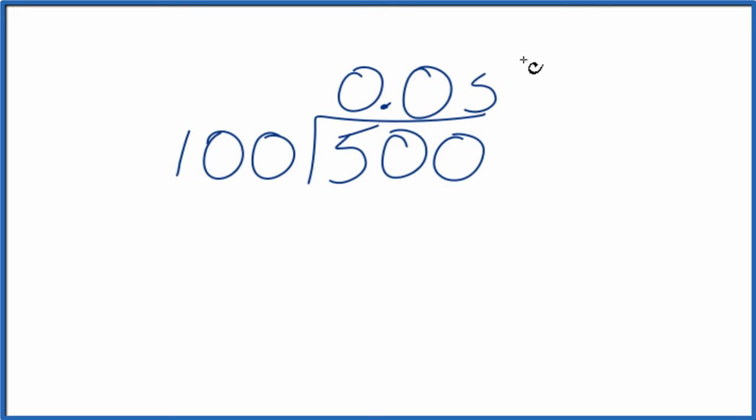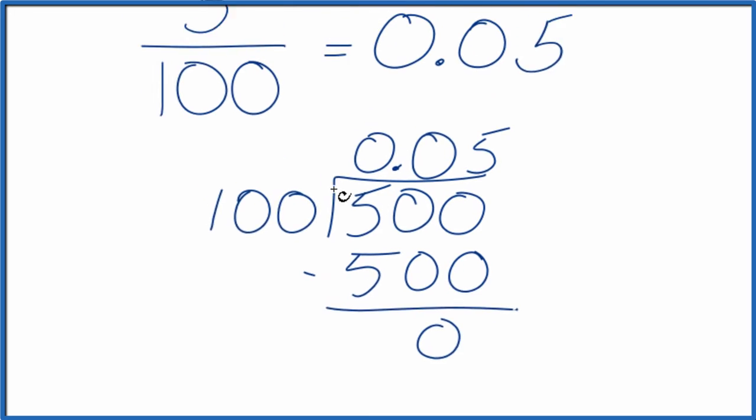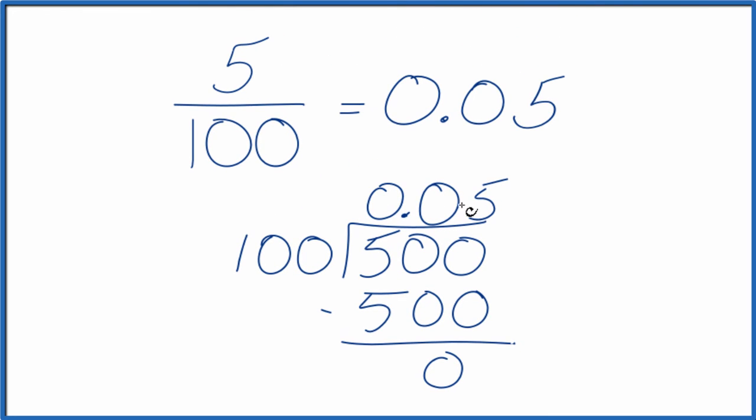We know that 5 times 100, that's 500. And we don't have any remainder. So when we divide 5 by 100, we get 0.05. And that's the same thing we got before.